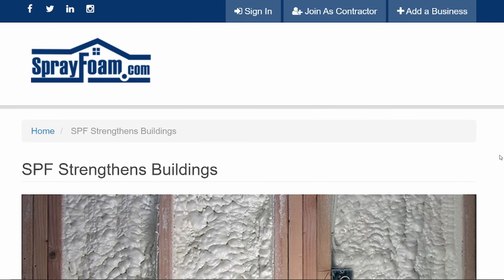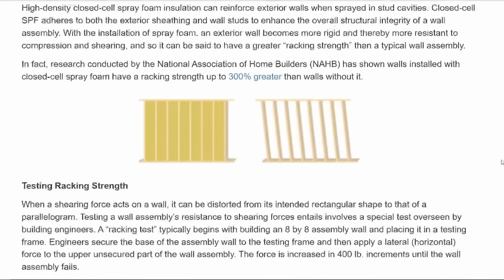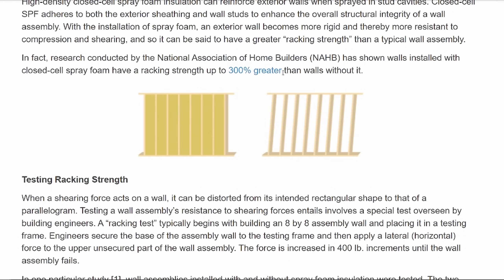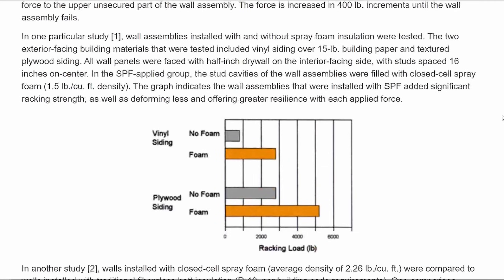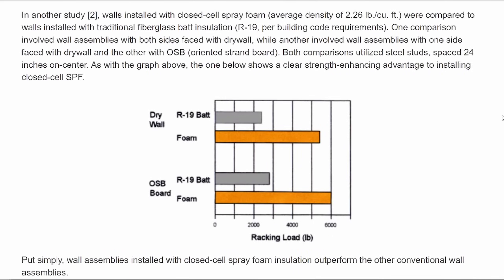Closed cell foam's rigid structure and durability make it ideal for exposed walls because it won't be damaged if bumped by machinery or tools. The National Association of Home Builders has shown that walls installed with closed cell spray foam have a racking strength of up to 300% greater than walls without it. High-density closed cell spray foam insulation can also reinforce exterior walls when sprayed in stud cavities.